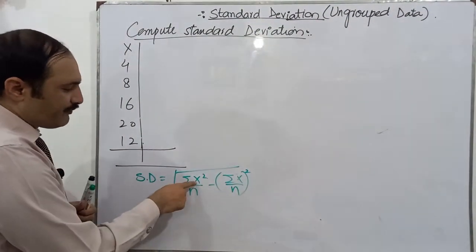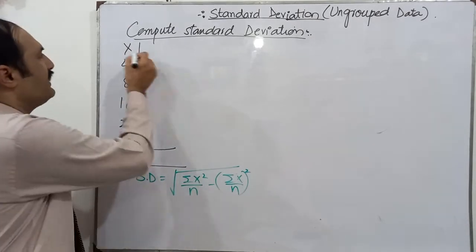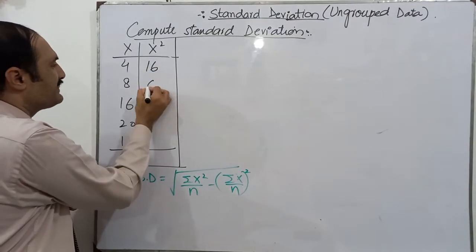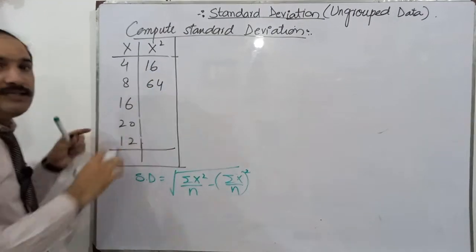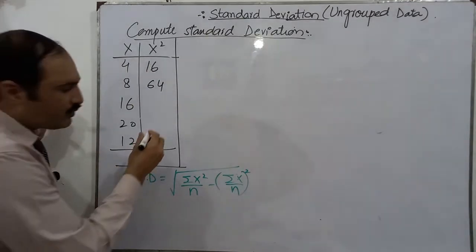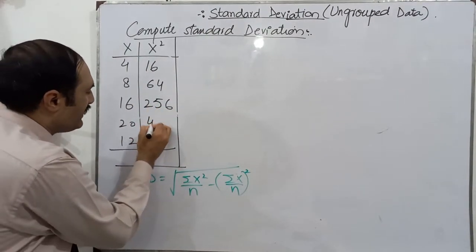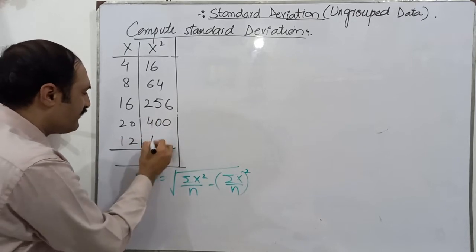Here we want x square, so we calculate x square. 4 times 4 is 16. 8 times 8 is 64. 16 square is 256. 400. 12 square is 144.